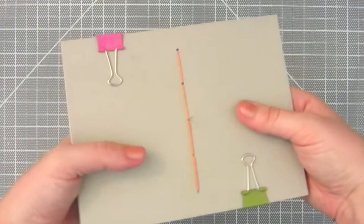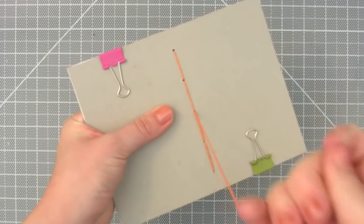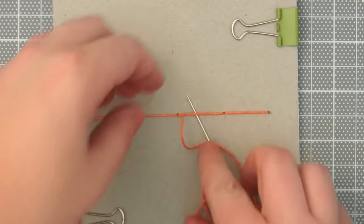On the last stitch, sew to the outside, tie a knot like this.